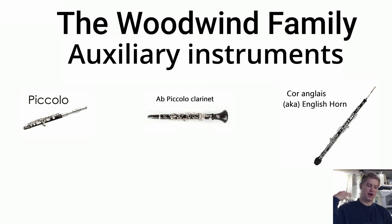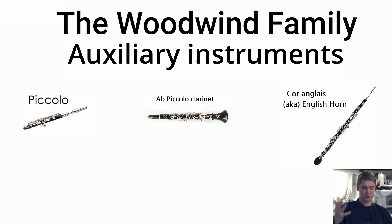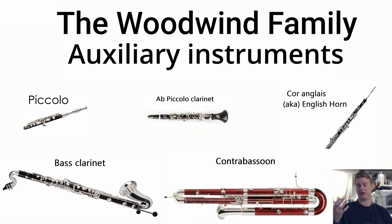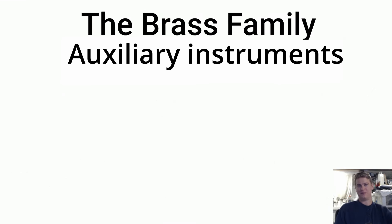In the oboe family, you also have the corps anglais, which is French for the English horn. For clarinet, you can have the bass clarinet, and you can also have a piccolo clarinet. For the bassoon, you can have the double bassoon or double contrabassoon.